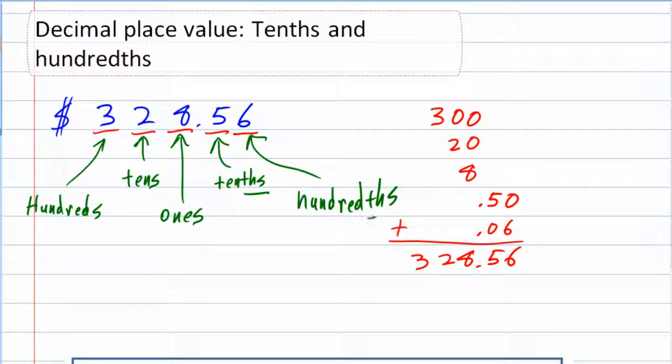And again, the THS on everything to the right-hand side of this decimal place is very important. So those are our place values.